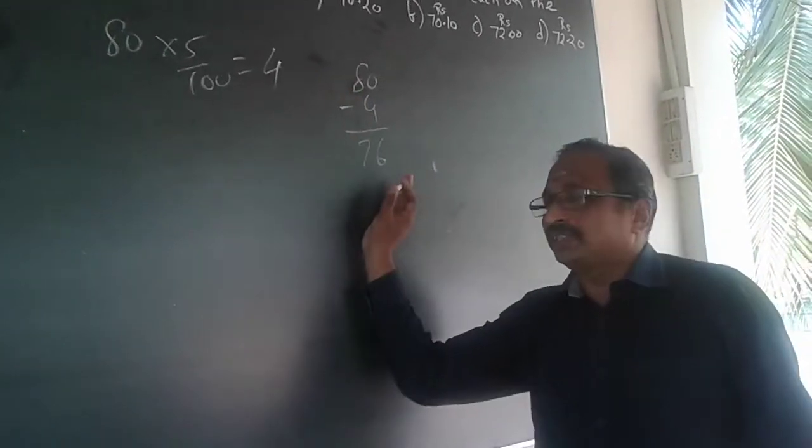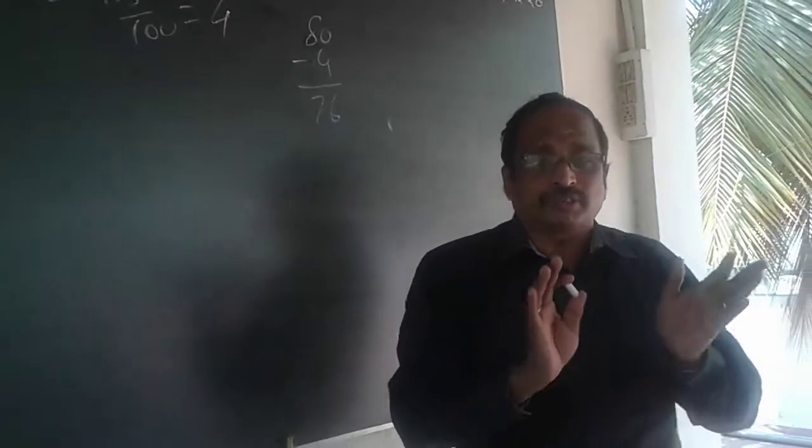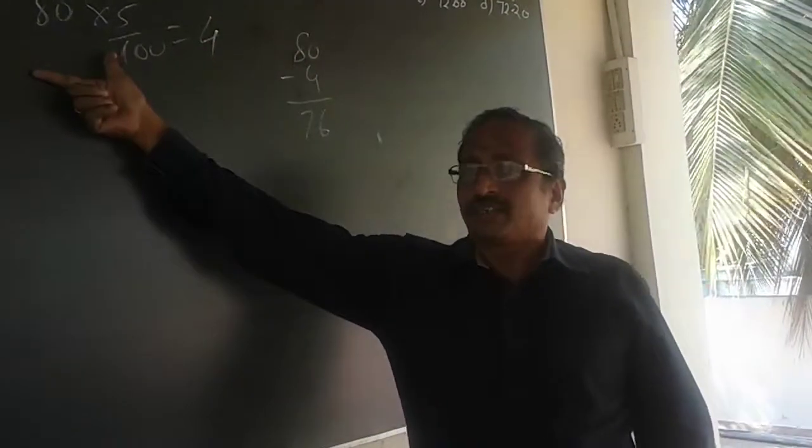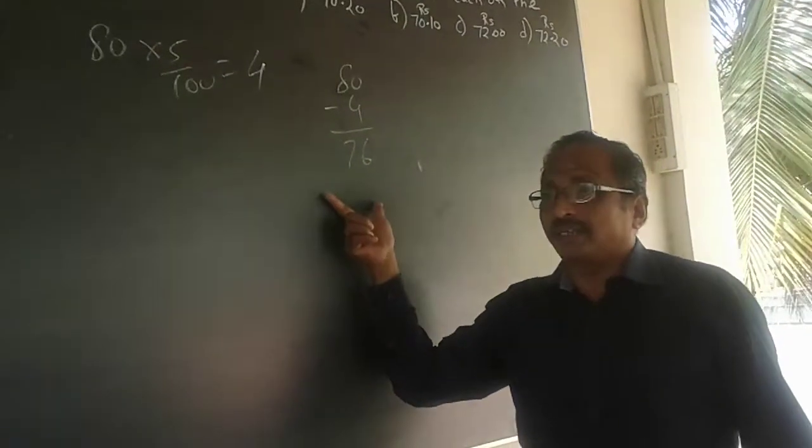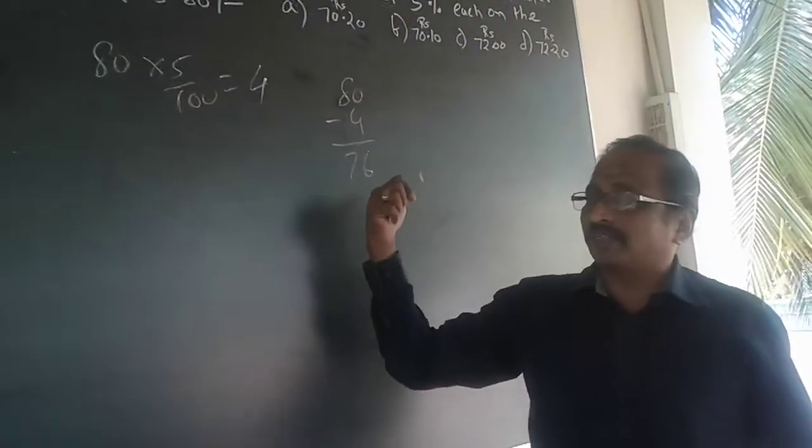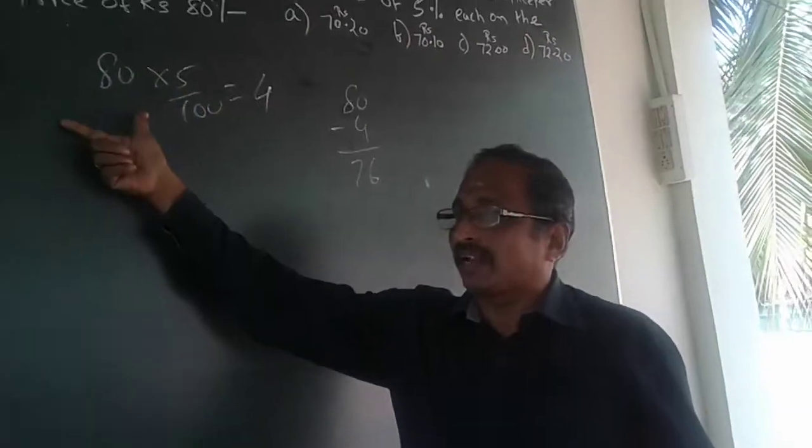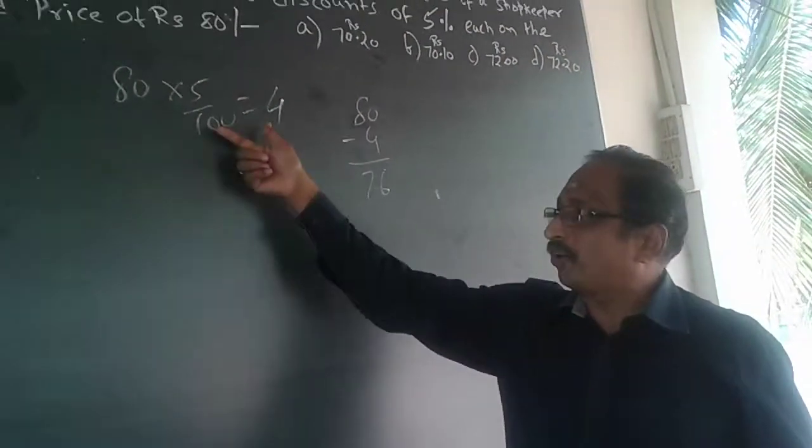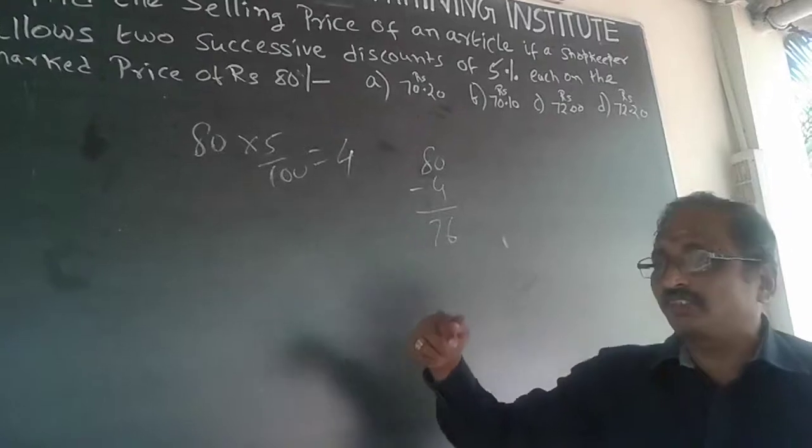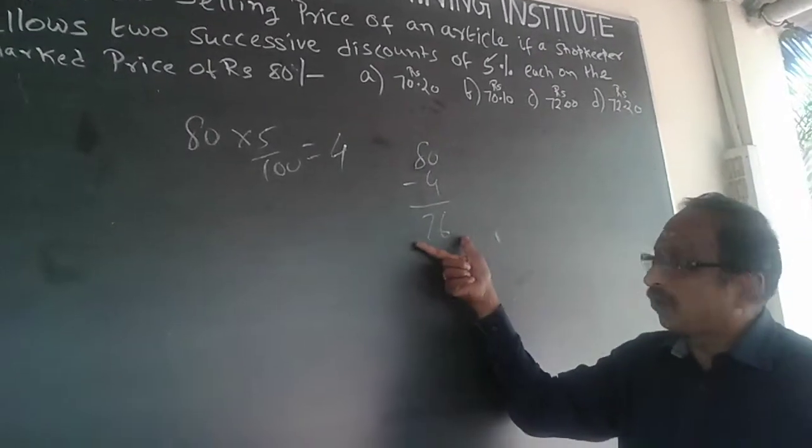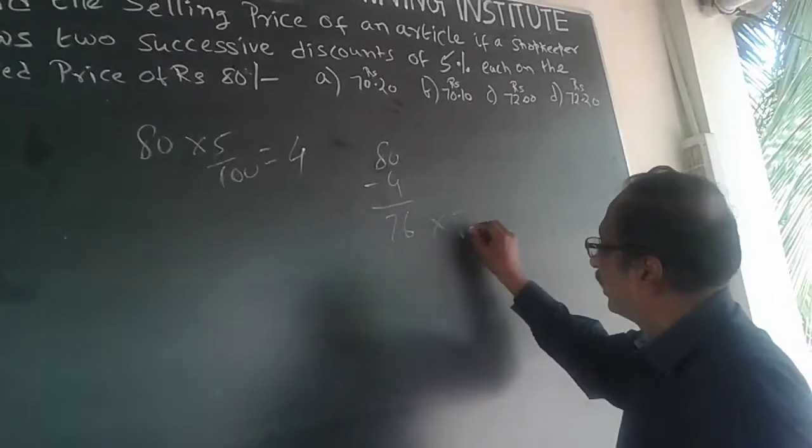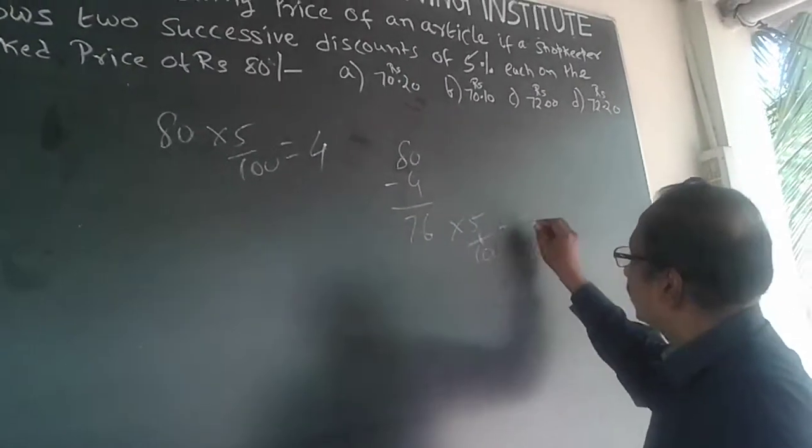Now some of you might be doing another 4 rupees here - don't do like that. Whenever I talk about successive discounts, I have to give a discount on this 76, not on 80 again. On the reduced price, I have to give a discount of 5%, not on 80 again. So 76 times 5/100 equals 3 rupees 80 paise.